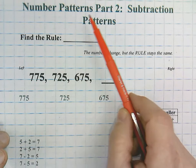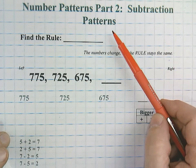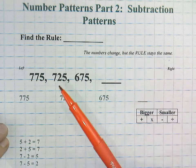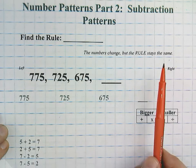Our topic today is number patterns part two, doing subtraction patterns today, and a number pattern is when you have a series of numbers, and usually they're from left to right.